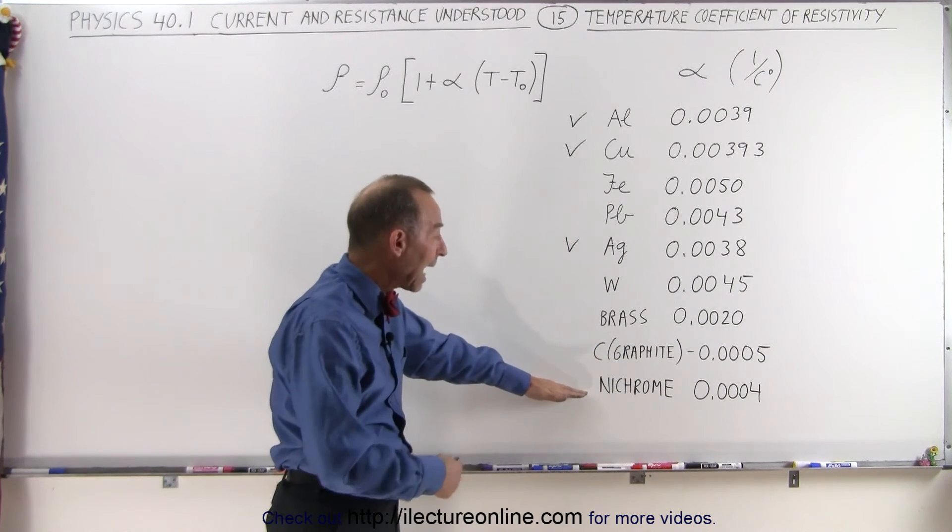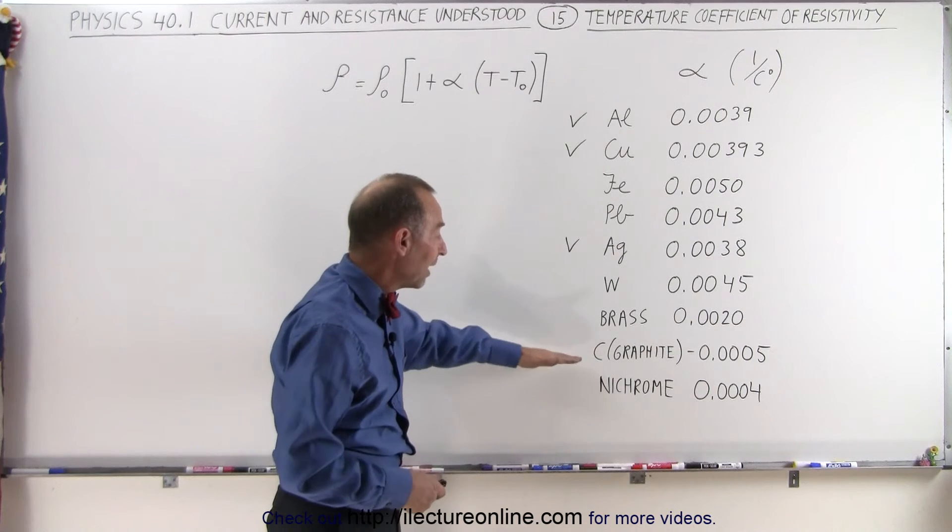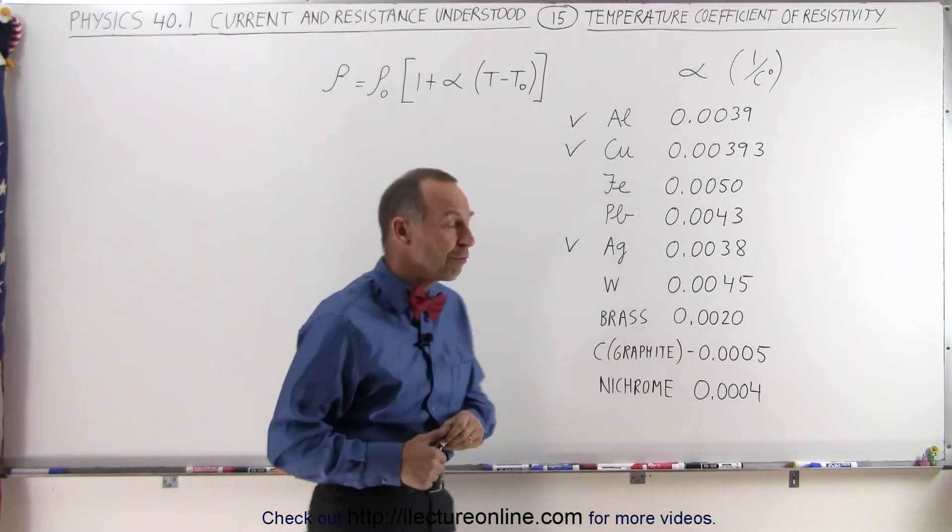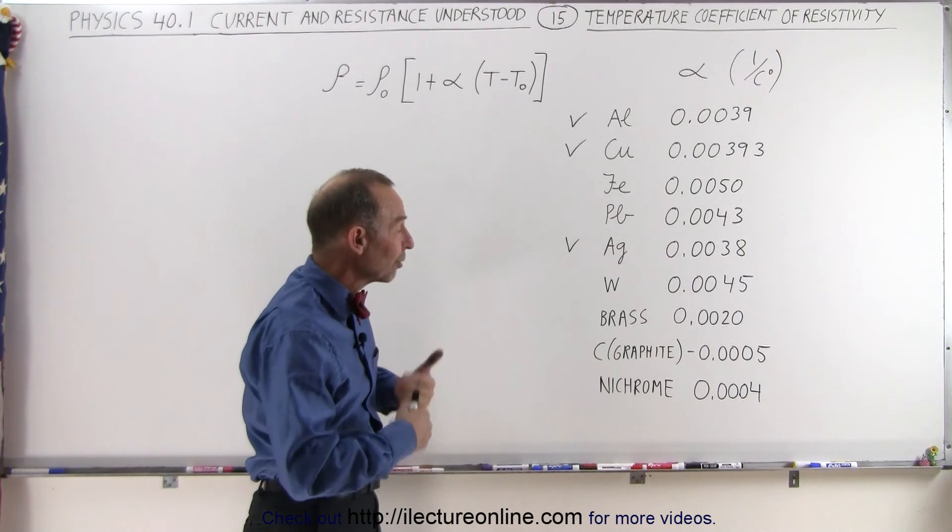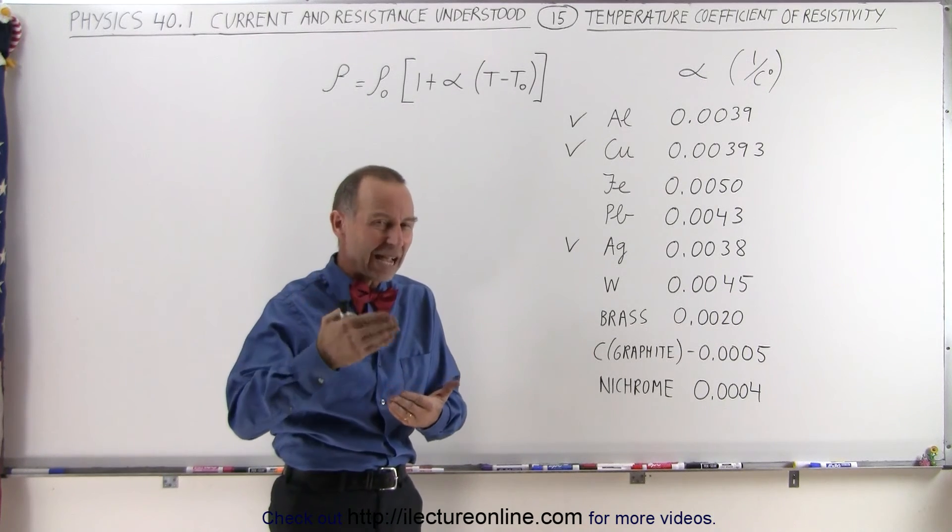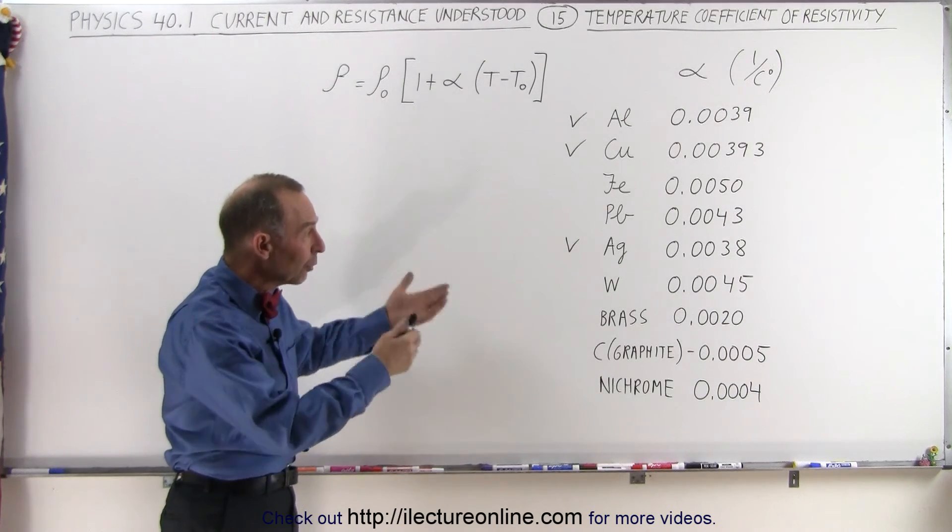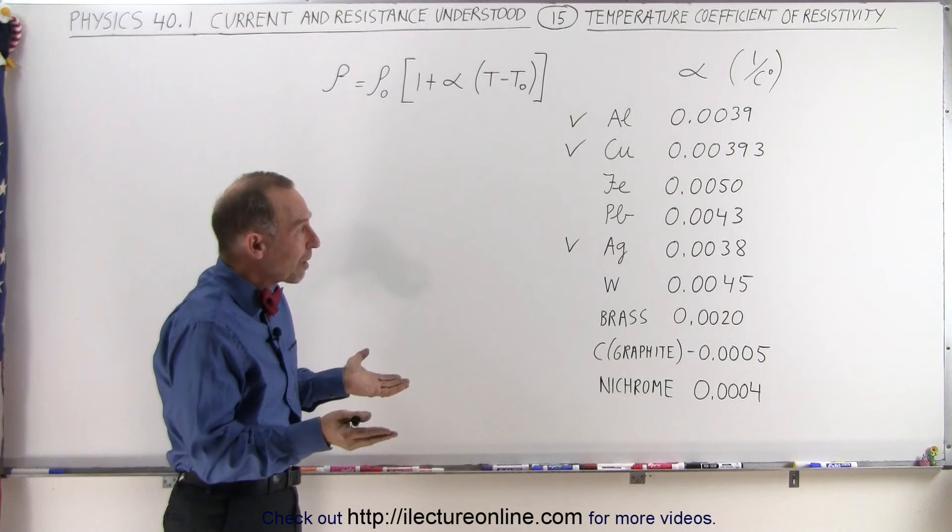And graphite, remarkably enough, has a negative temperature coefficient of resistivity. In other words, in graphite as the temperature goes up, the resistivity actually goes down. So that gives you some kind of feel for resistivities and how for most metals they're quite common and quite similar in the amount.